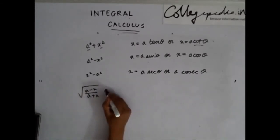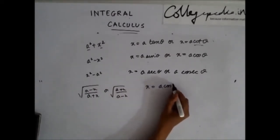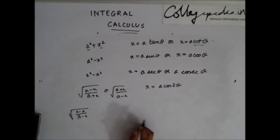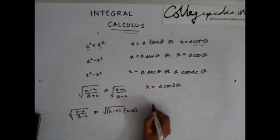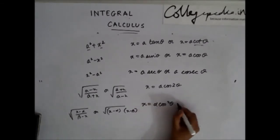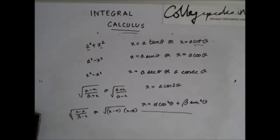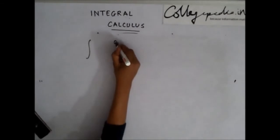If you encounter a term like √[(a - x)/(a + x)] or √[(a + x)/(a - x)], you could substitute x = a cos2θ. And if you encounter terms like (x - α)/(β - x) or (x - α)(x - β), you could put x = α cos²θ + β sin²θ.